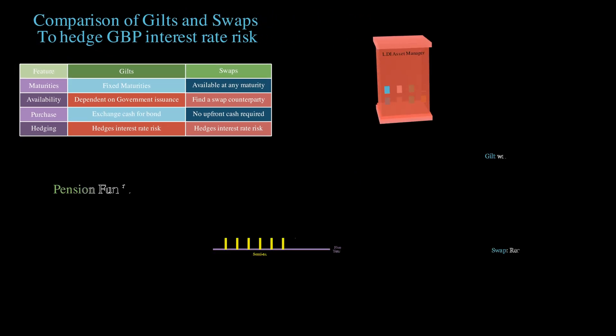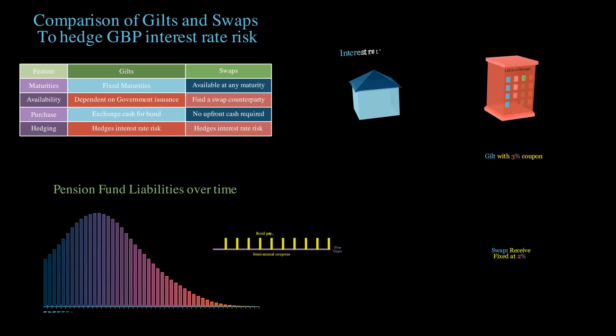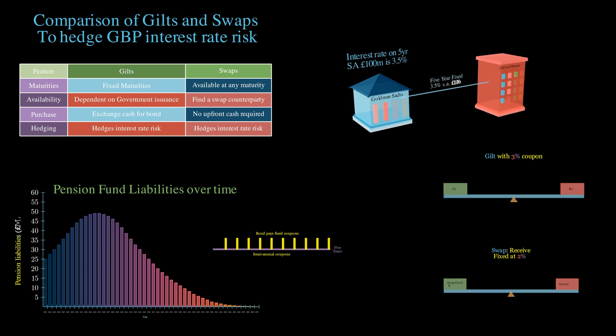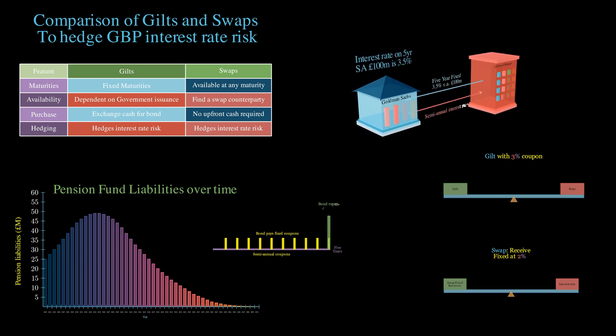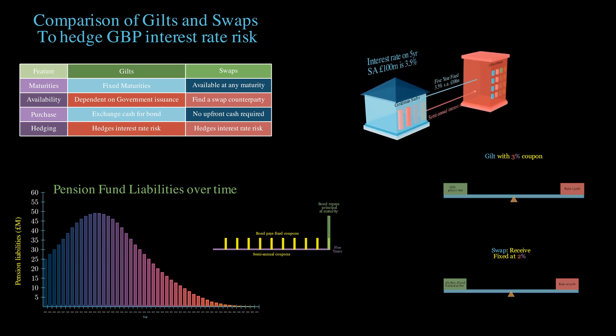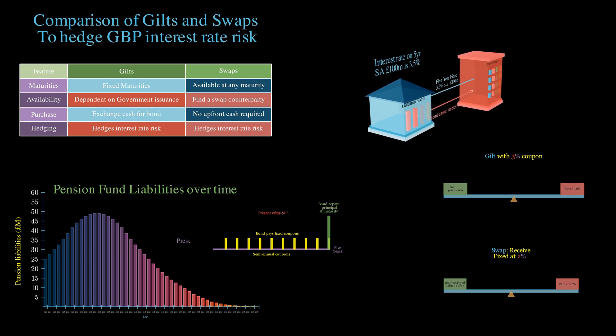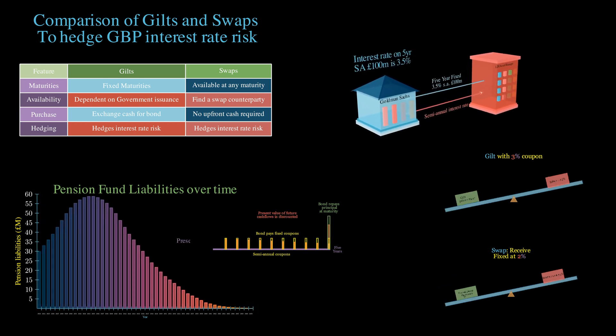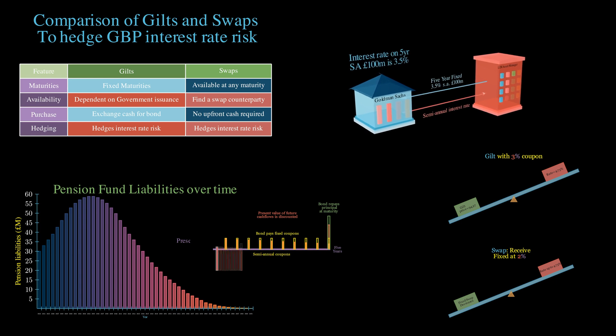Now, as we said at the outset, all this stuff with swaps and derivatives and hedging is quite complex. Please feel free to pause and rewind the video and make sure it makes sense, and check out some of Lucidate's other videos on this topic — links in the description. But the purpose of this discussion, if you recall, was to set up the importance of fine-tuning our LLMs.